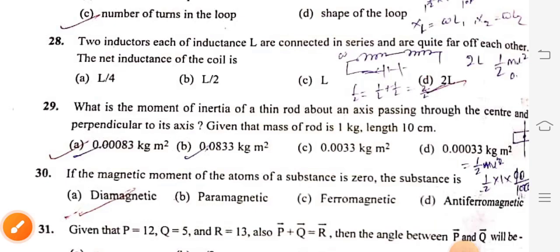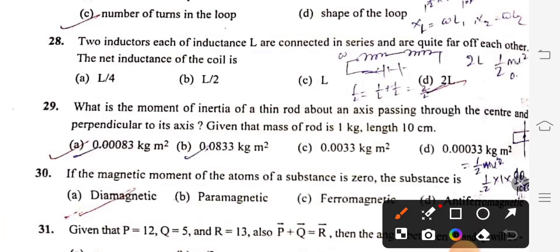Question 29: What is the moment of inertia of a thin rod about an axis passing through the center and perpendicular to its axis? Given that mass of rod is 1 kg and length is 10 cm. The right option is option A, 0.0083 kg per meter square.